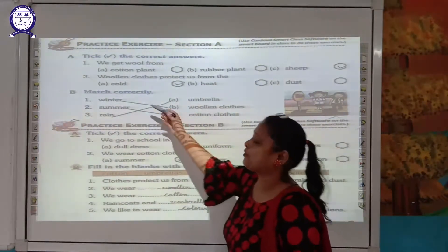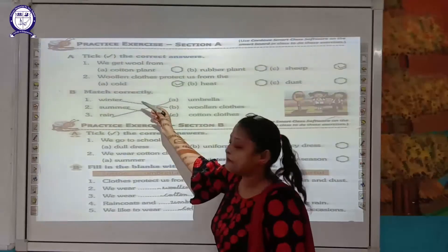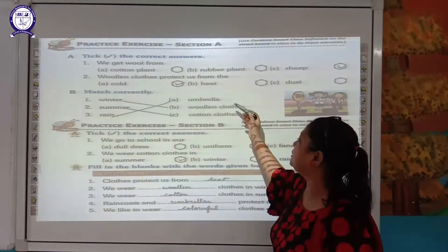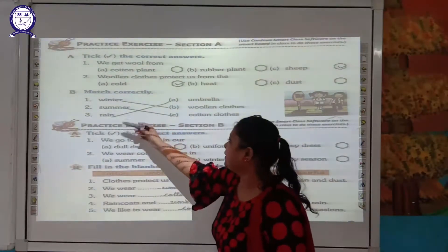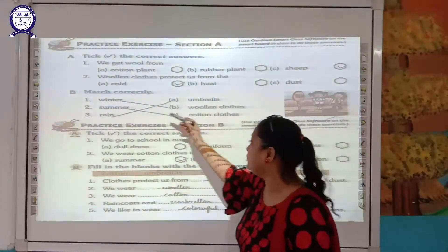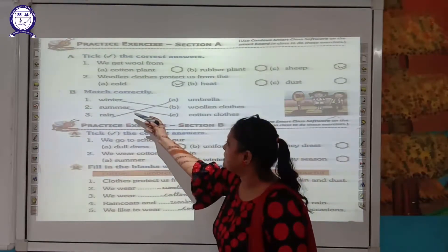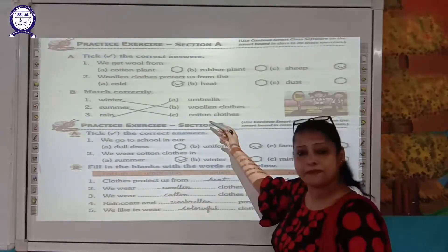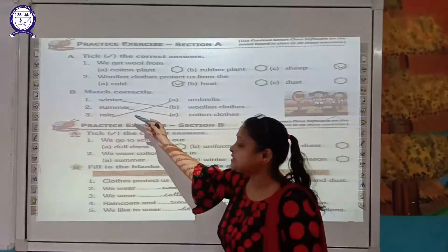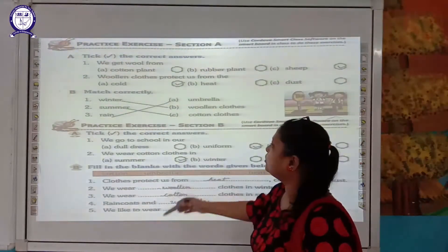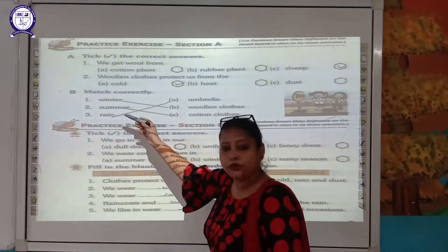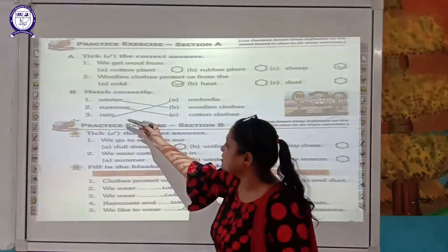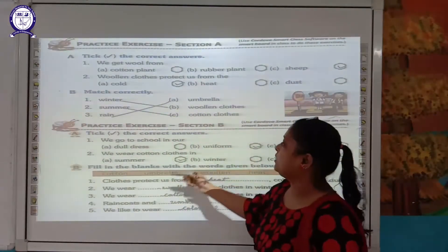Now match correctly: Winter — match with woolen clothes. Summer — match with cotton clothes, because cotton keeps our body cool. Rain — match with umbrella, because we take an umbrella in the rainy season.